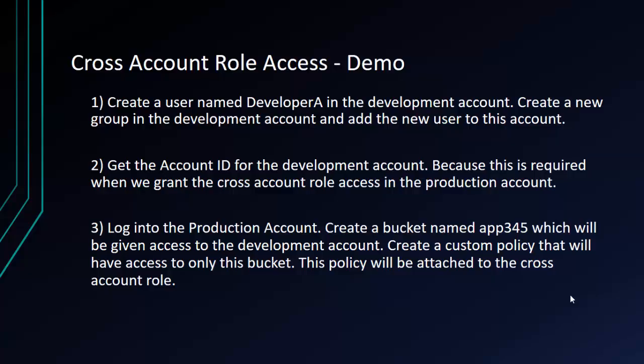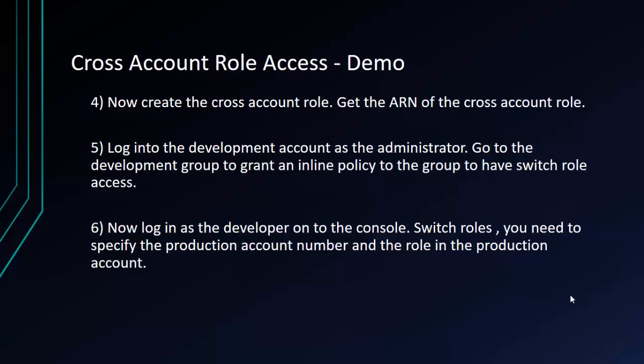We'll log into our production account, create a bucket which will be given access to the development account, and create a custom policy so that only access is given to this particular bucket. That policy will then be attached to the cross account role. Then we'll create our cross account role. We have to ensure we get the ARN of this cross account role because when we go to the development group in the development account, we need to create a policy to the development group which will have the ability to switch roles — and for that we need the ARN.